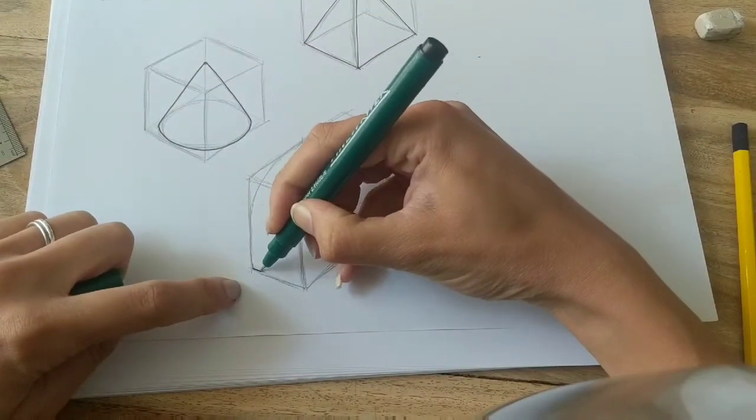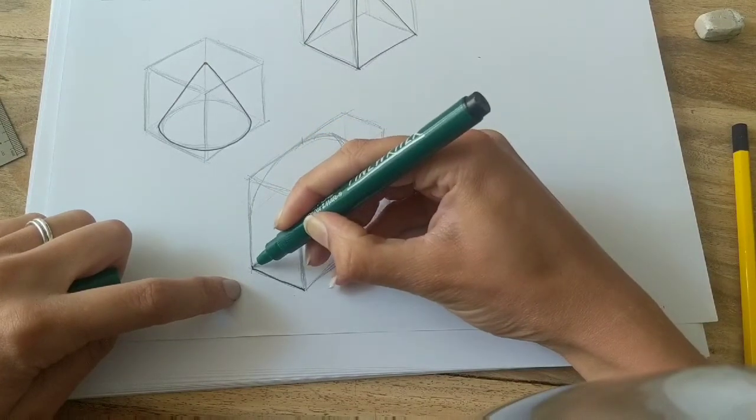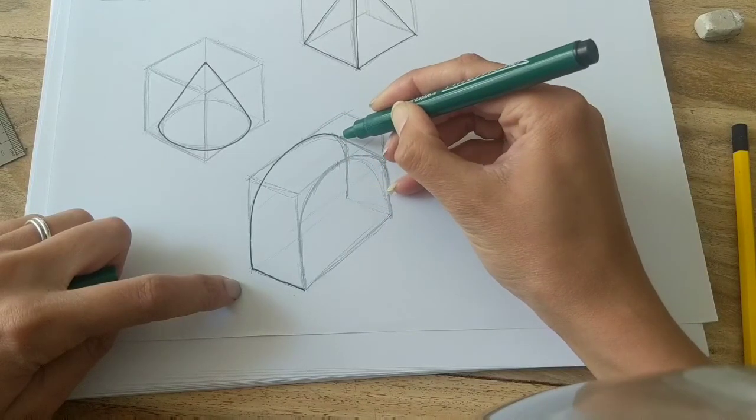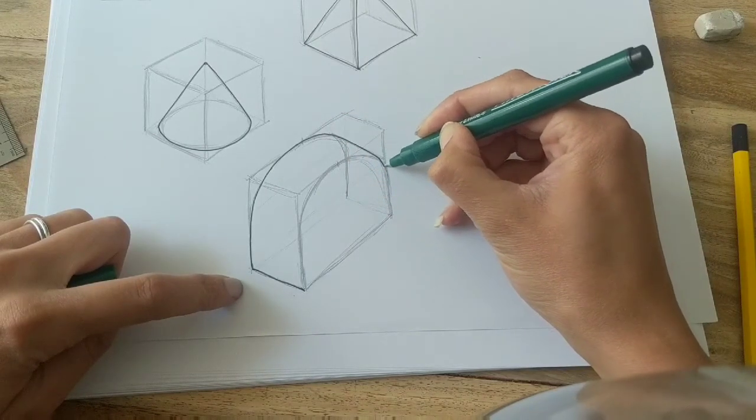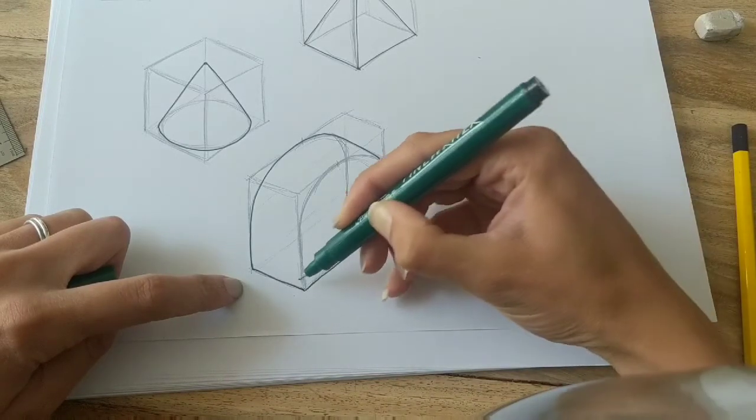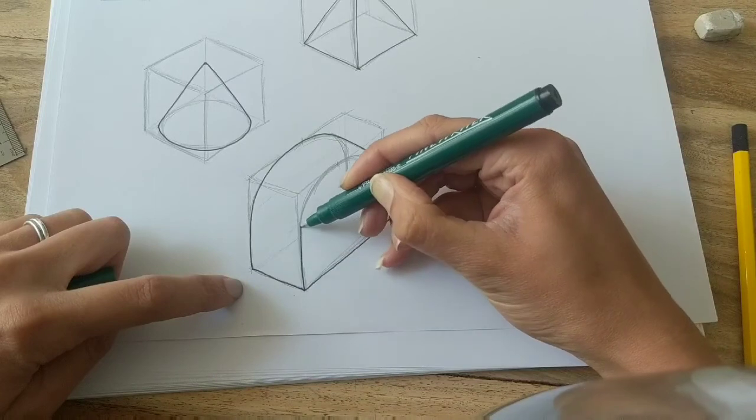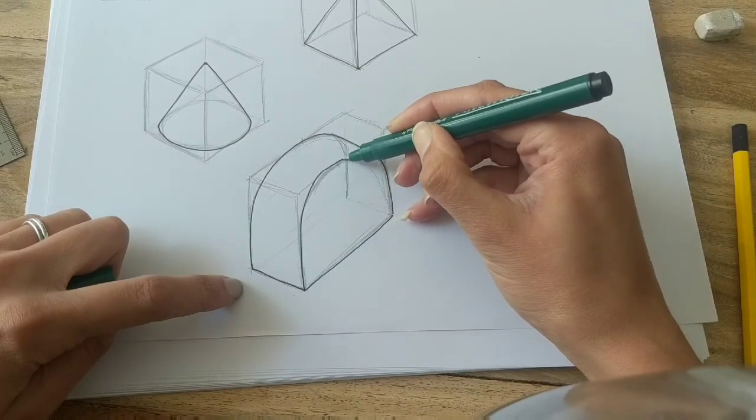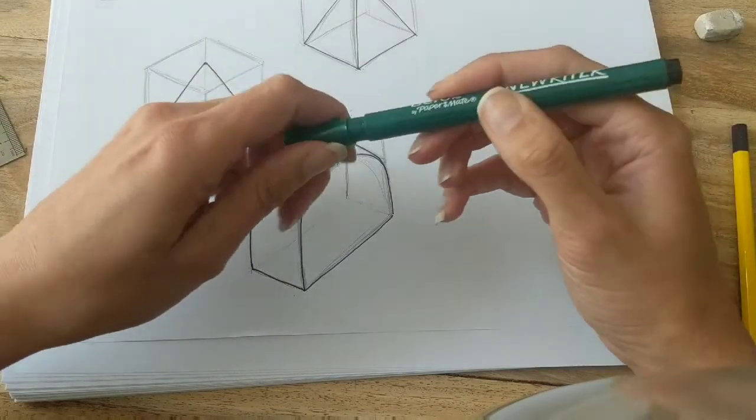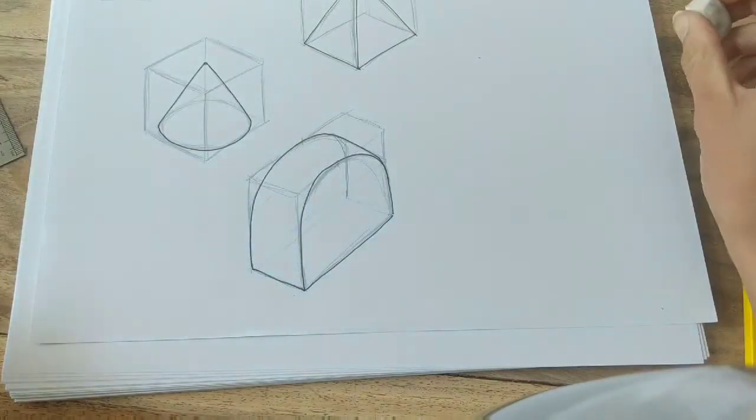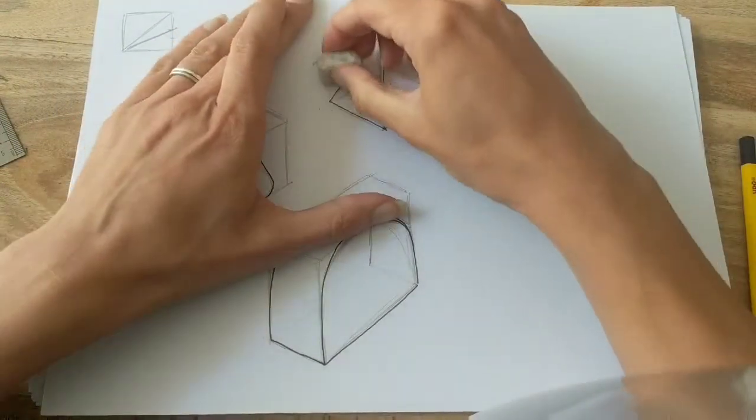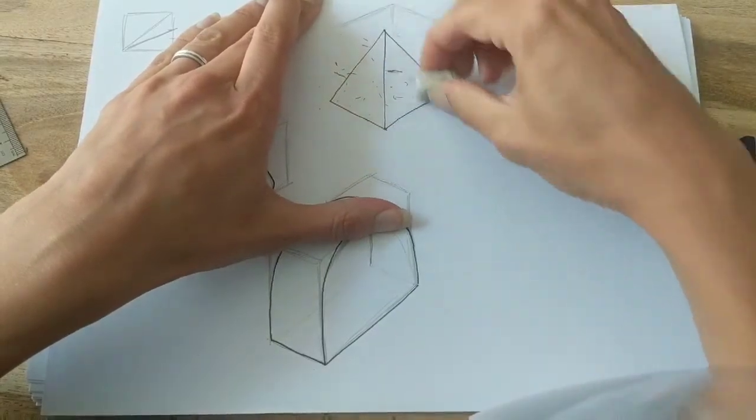And then fine line it, making sure that you're doing only the edges you'd see if it was a solid object. And you can go around and rub out all your guidelines.